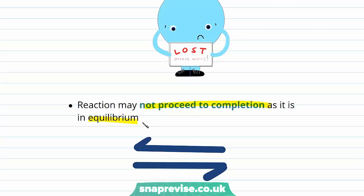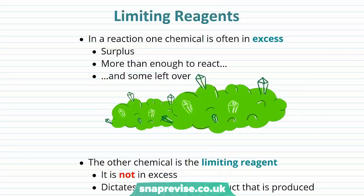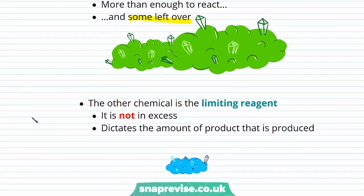So now we've had a look at percentage yield and the importance of it. Let's have a quick look at the idea of limiting reagents. In a reaction with multiple reagents, one of these reagents may be limiting. What we mean by that is one chemical is often in excess — it's in surplus, there's more than enough of it to react and some is left over. The other chemical is going to be the limiting reagent; it's not in excess and it dictates the amount of product that is produced.